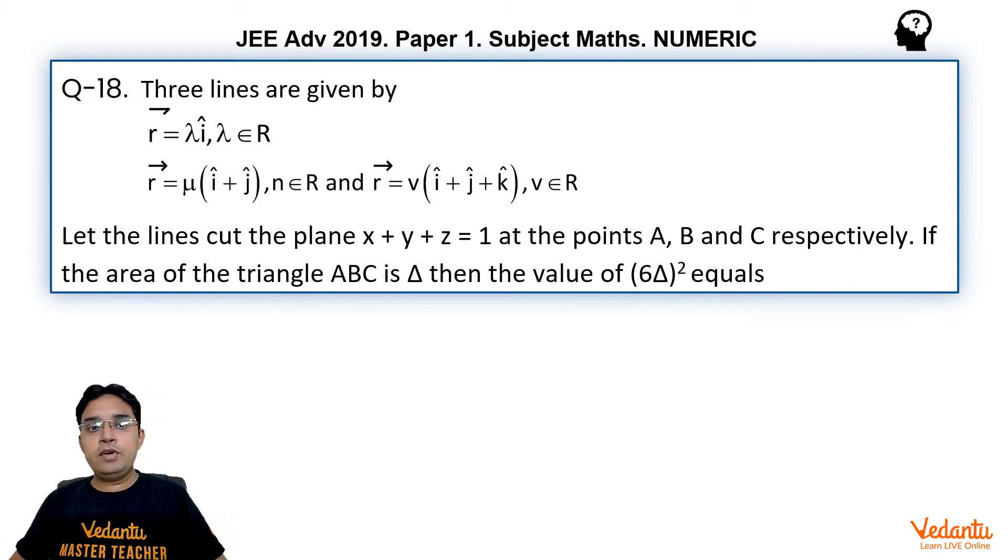In this question they are asking one very simple use of dot product or cross product to find area of a triangle. Let us see what this question is. Three lines are given by r equal to lambda i cap, r equal to mu times i cap plus j cap, and r equal to nu times i cap plus j cap plus k cap. Let the lines cut the plane x plus y plus z equal to 1 at the points A, B and C respectively. If the area of the triangle ABC is delta then find the value of 6 delta whole square.